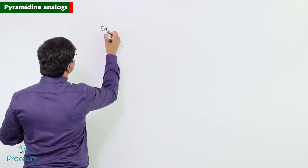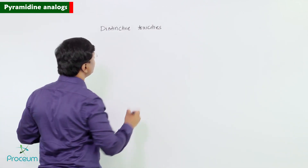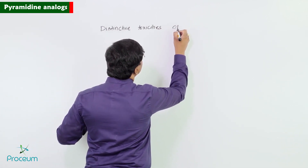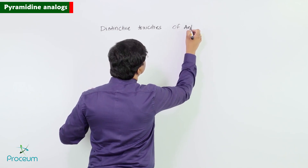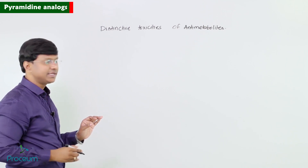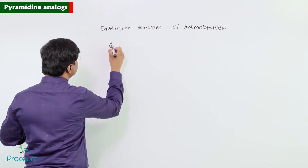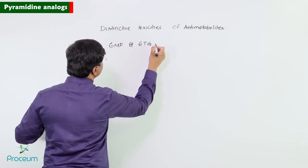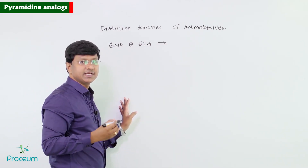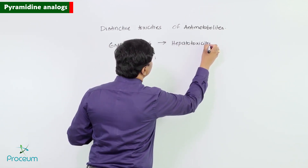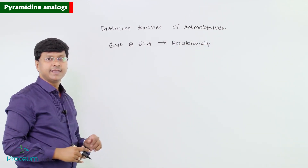Now let me discuss some of the distinctive toxicities of the antimetabolites. 6-mercaptopurine and 6-thioguanine are both associated with hepatotoxicity.